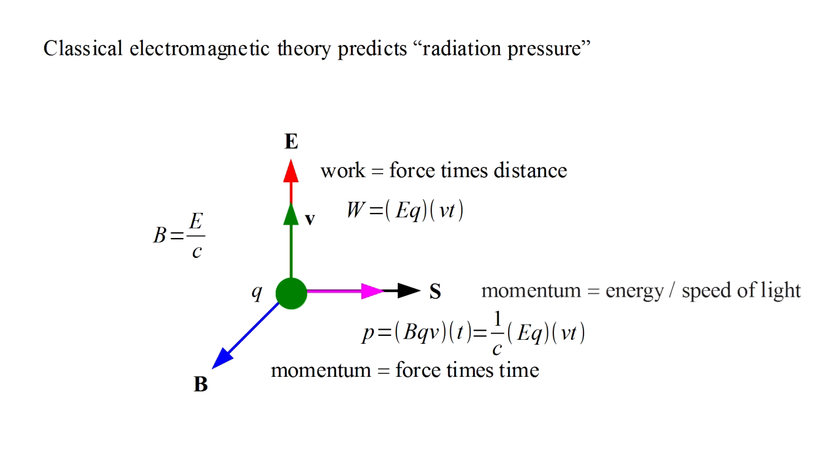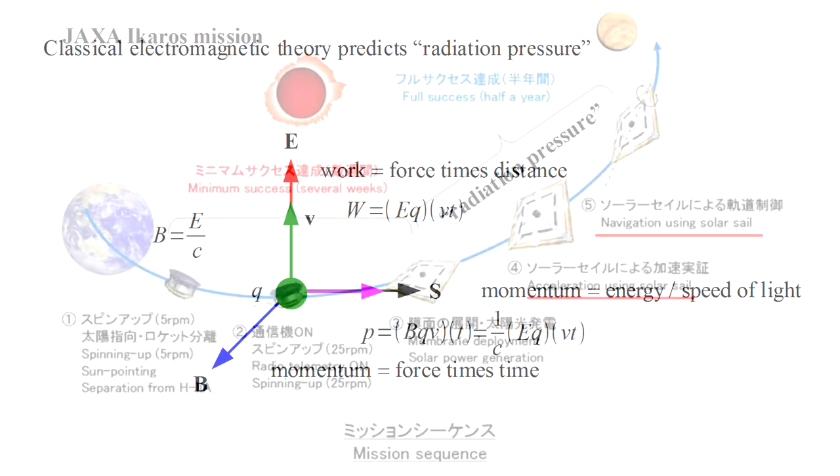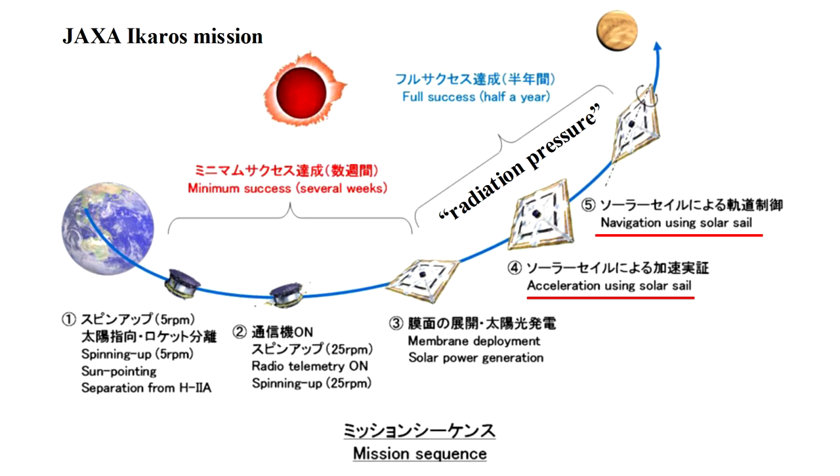If light transfers some energy to a charged particle, it also transfers a momentum equal to the energy over the speed of light. And the transferred momentum is in the direction that the light is traveling. The reality of radiation pressure was spectacularly demonstrated by a recent Japanese space mission to Venus, which deployed a so-called solar sail to use radiation pressure from the sun to accelerate and navigate the spacecraft.